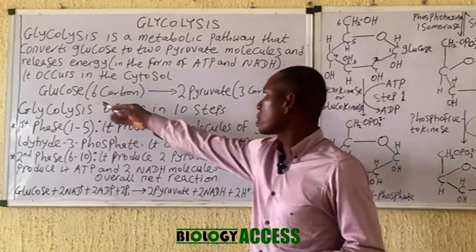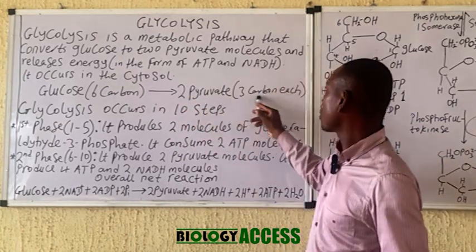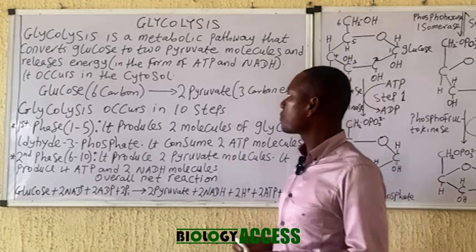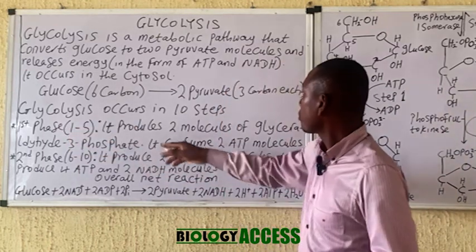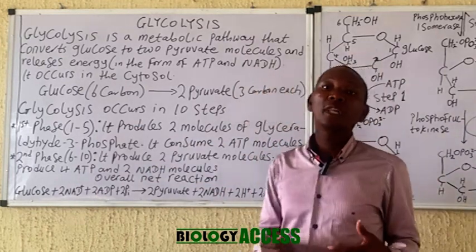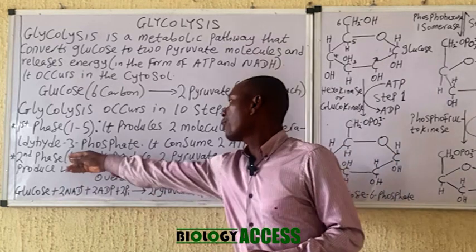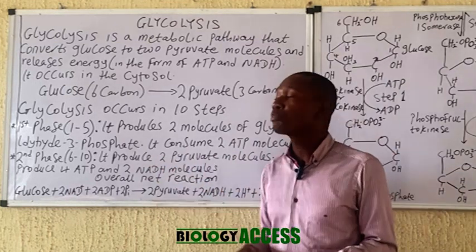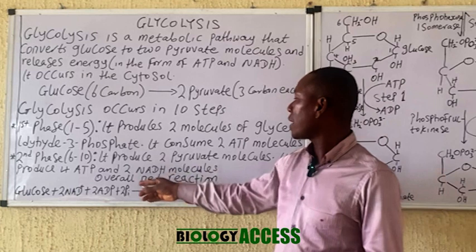In summary, glucose — a six-carbon molecule — is converted to two pyruvate molecules, each of which is a three-carbon molecule. Glycolysis occurs in 10 steps. Steps one to five, which I call the first phase, produce two molecules of glyceraldehyde-3-phosphate and consume two ATP molecules — so in this phase, energy is actually being consumed.